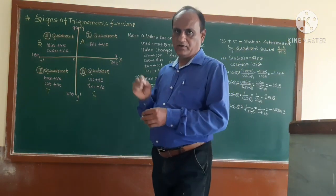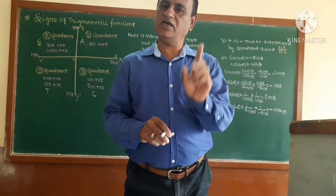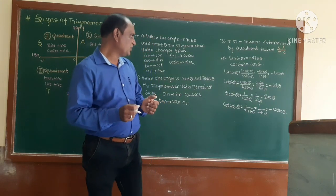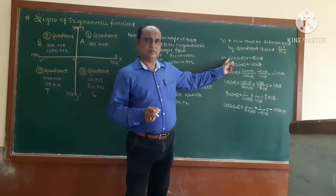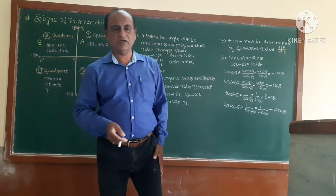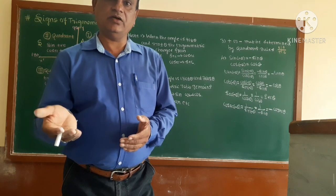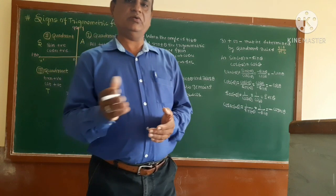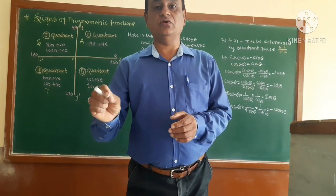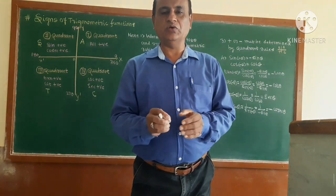The plus or minus depends on the quadrant rule — ASTC. Whether it is plus or minus depends on which quadrant the angle lies in. Two important formulas to remember: sin(−θ) = −sinθ and cos(−θ) = +cosθ. In the next period, we will cover sin(90° − θ), sin(90° + θ), sin(270° − θ), and sin(270° + θ). Thank you.